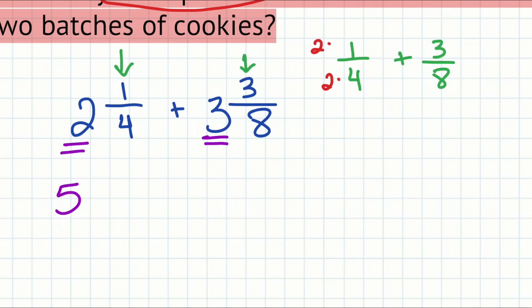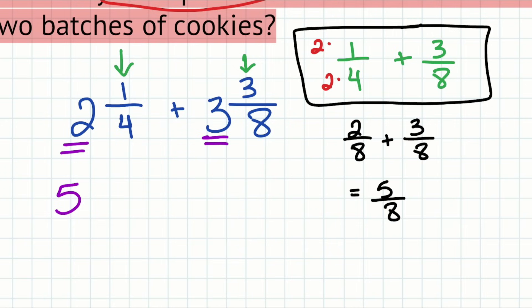And so once we're there, we see that this right here will turn into two over eight plus three over eight, which gives us five over eight. And so we'll bring this back right over here. And there's our answer. Five and five eighths pounds of flour.